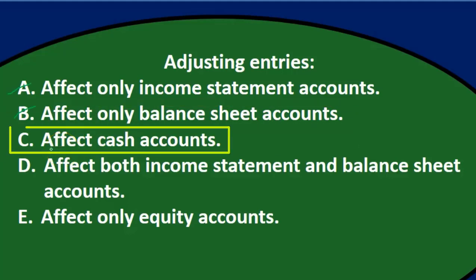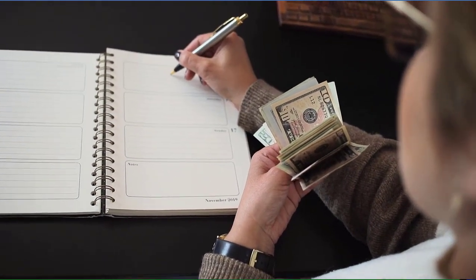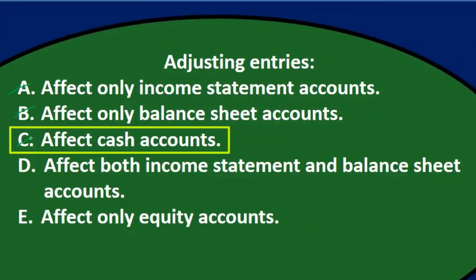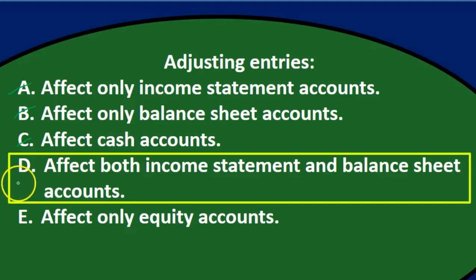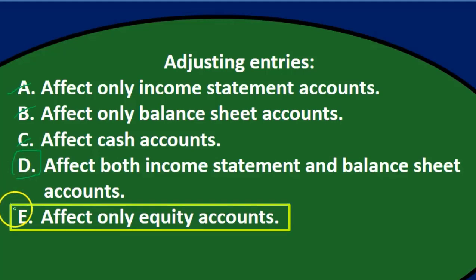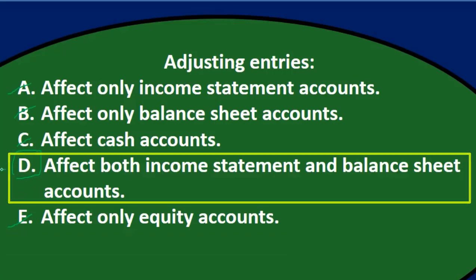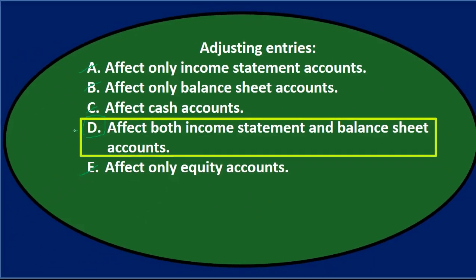C says affects cash accounts — actually, the one account that is not affected in adjusting entries is the cash account, which is very different from normal journal entries where cash is affected most of the time, about 75% of the time. D says affect both income statement and balance sheet accounts — that's the one. E says affects only equity accounts — that's not true either, even if we consider the income statement as part of equity, there are still balance sheet accounts involved. So D is the best answer: adjusting entries affect both income statement and balance sheet accounts.